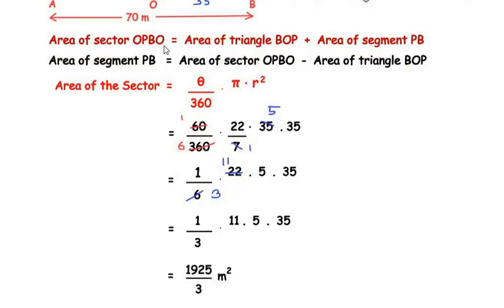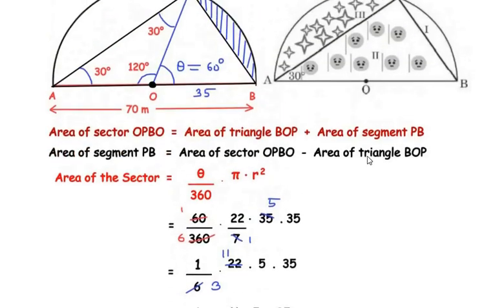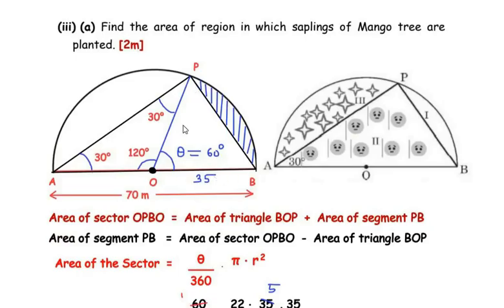Now finding the area of triangle BOP. By the circle theorem, the angle made in a semicircle by the diameter is always 90 degrees. So angle P in triangle APB is 90 degrees. With angle A equal to 30 degrees and angle P equal to 90 degrees, angle B equals 180 minus 90 minus 30, which is 60 degrees.